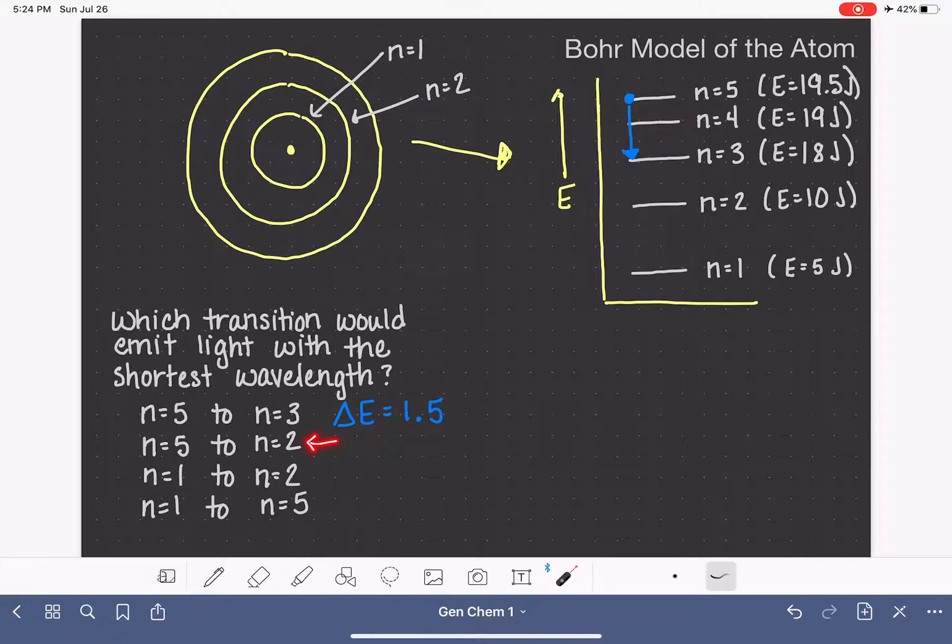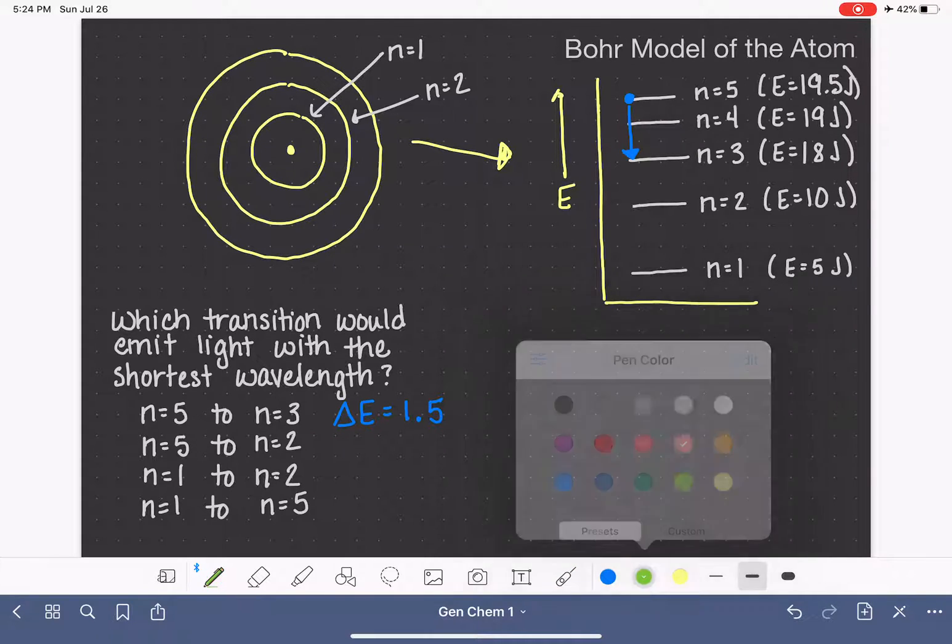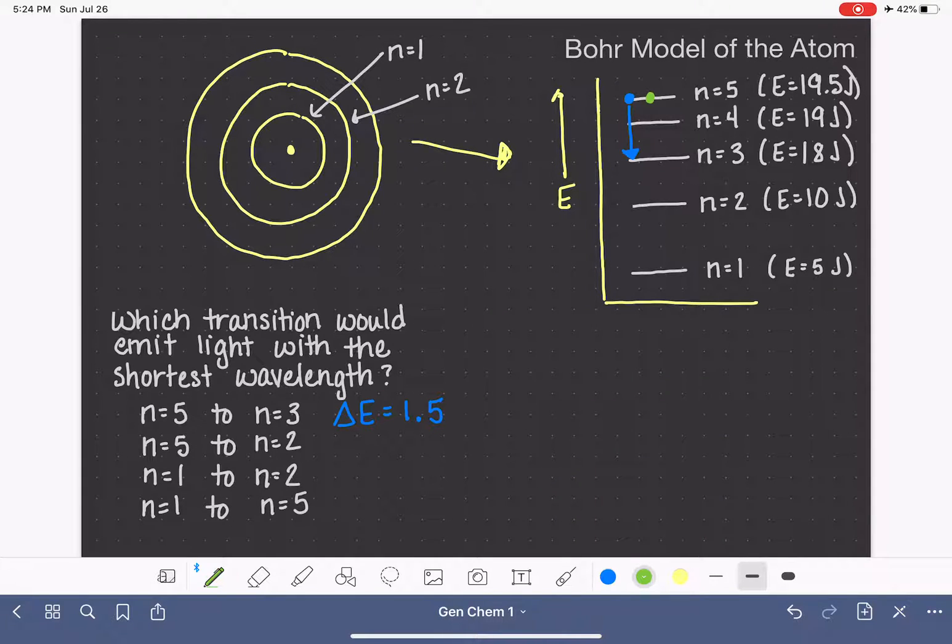What about our next transition going from n equals 5 down to n equals 2? So that transition starting at n equals 5 and we're going down to n equals 2. In order to make that transition, our electron had to start at 19.5 joules and then drop itself down to 10. So what's the transition there? Starting at 19.5, dropping down to 10, that is a 9.5 joule change in energy, which is quite a bit bigger. So we've already figured out that this transition emits light with higher energy than this transition.